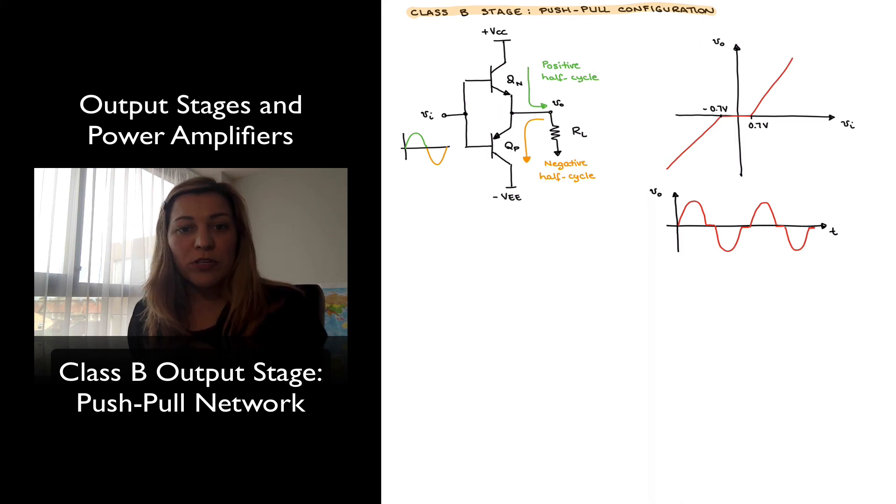Notice I have drawn a sample BJT push-pull configuration there. It consists of two transistors, an NPN transistor labeled QN and a PNP transistor labeled QP, which are connected to a positive and negative supply respectively, plus VCC and minus VEE. There's an input signal, VIN, which is being applied simultaneously to the bases of the two transistors, and the output voltage, VOUT, is taken out of the node where both the emitters are connected. And then there is a load resistor connected to the output node, RL.